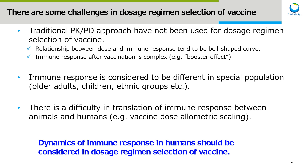In vaccine clinical development, it is essential to design the optimal dosage regimens. However, there are some challenges related to human immune response in dosage regimen selection of a vaccine. First, traditional PKPD approaches haven't been used for dosage regimen selection of a vaccine, because the relationship between dose and immune response tends to be a bell-shaped curve, and immune response after vaccination is complex — for example, the booster effect, which I will explain later.